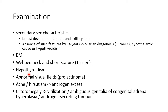Features of hypothyroidism should be examined. Abnormal visual fields might indicate prolactinoma. Acne or hirsutism should be looked for, as these might indicate androgen excess. Clitoromegaly should be looked for, as this might indicate virilization or ambiguous genitalia of congenital adrenal hyperplasia, or be due to an androgen-secreting tumor.